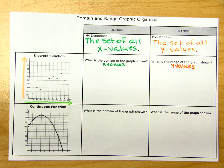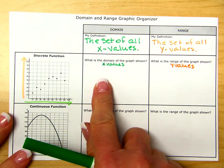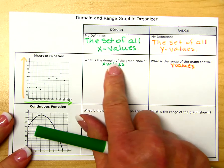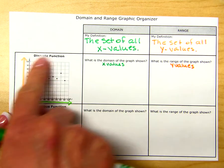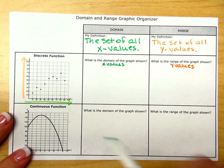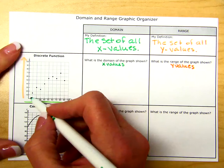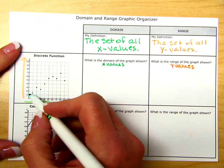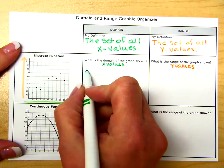So let's start with domain. It asks: what is the domain of the graph shown? Here we have a discrete function, which means we are going to have specific values of x. Here we have this ordered pair, and its x value is 10.